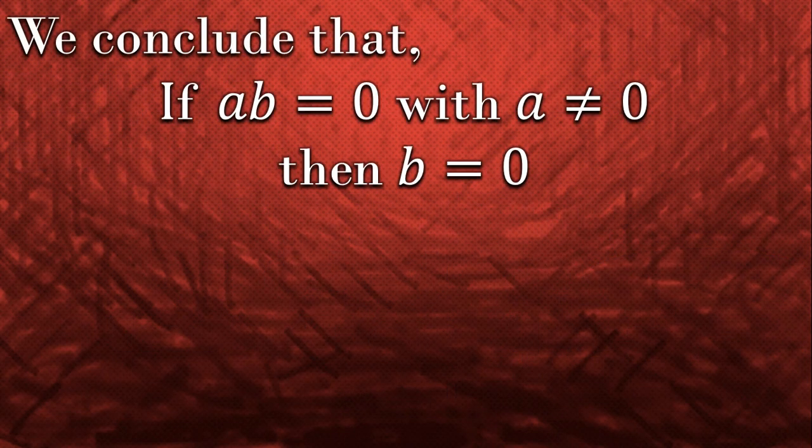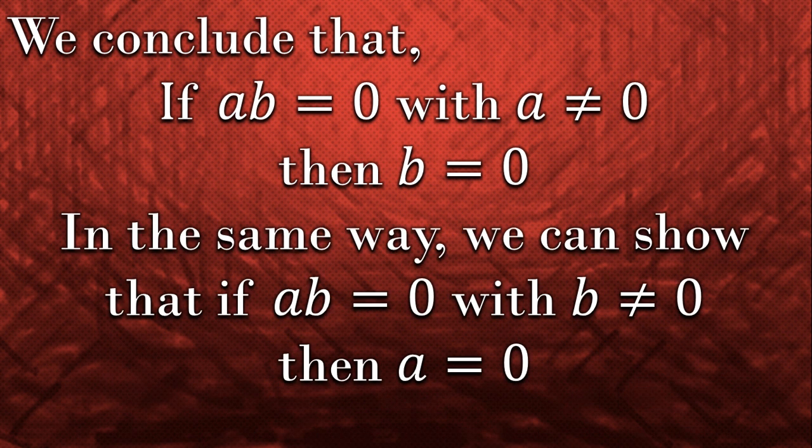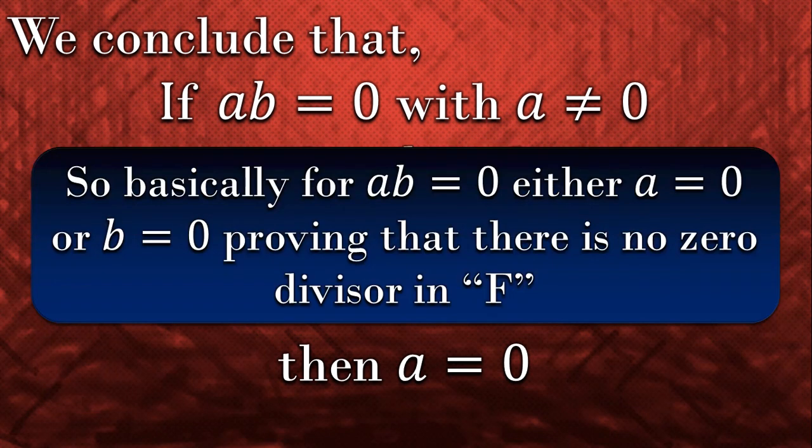Hence, if two elements give 0 on multiplication with one of them non-zero in a field, then the other one is definitely 0, showing that no zero divisors exist in a field.